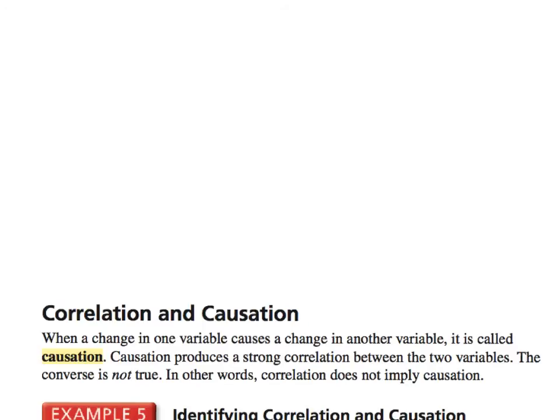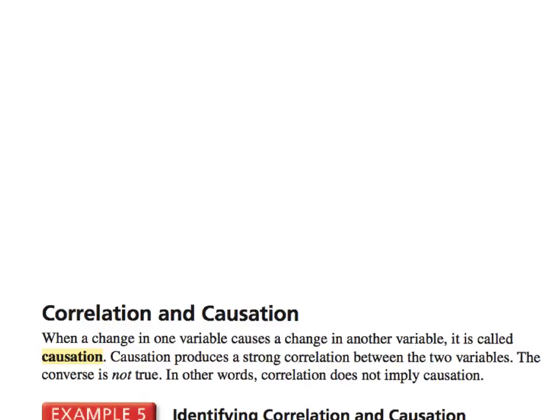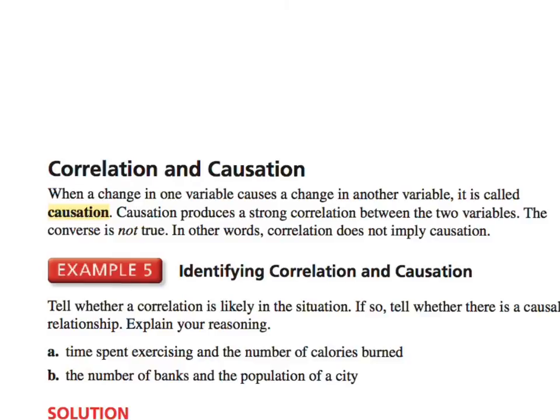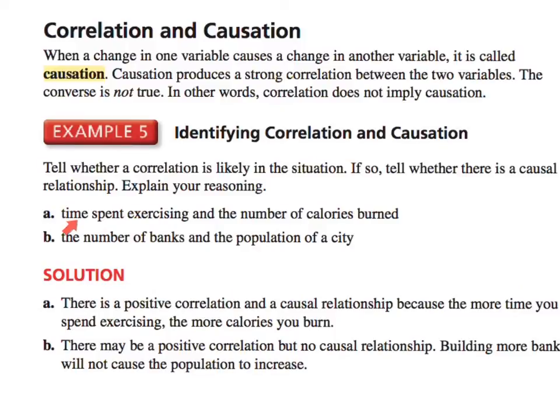Now, correlation is the relationship between things. When a change in one variable causes a change in another variable, it's called causation. Causation produces a strong correlation between the two variables. The converse, though, is not true. In other words, correlation does not imply causation. So what that means is just because two things are related does not mean one thing causes the other. So here's what we want to know. Tell whether a correlation is likely in the situation. If so, tell whether there is a causal relationship. Explain your reasoning. So first thing, the time spent exercising and the number of calories burned. Well, there is a positive correlation and a causal relationship. Because the more time you spend exercising, the more calories you burn.